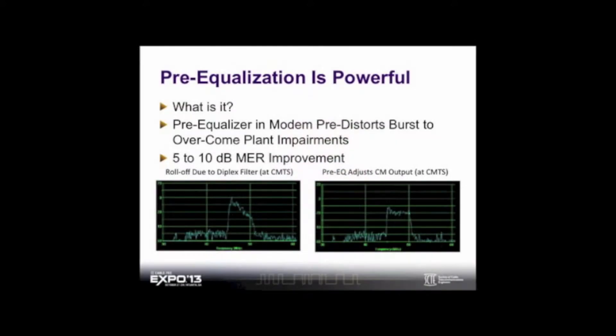What is DOCSIS pre-equalization and why do you care? Great question — because it will save you time and money. Pre-equalization is available in nearly every DOCSIS network running today, and enabling it requires a simple one-line command in the CMTS, which will typically result in a 5 to 10 dB improvement in upstream MER.